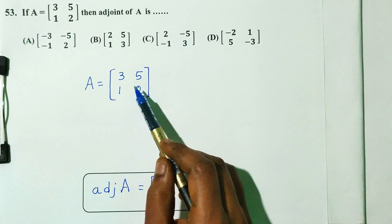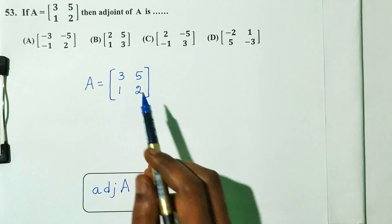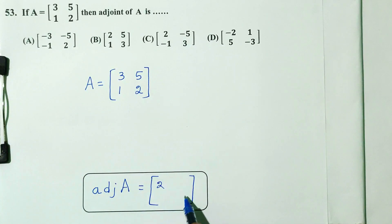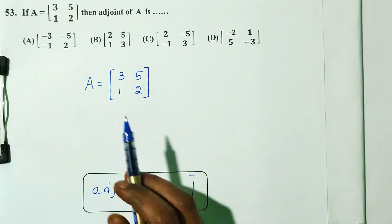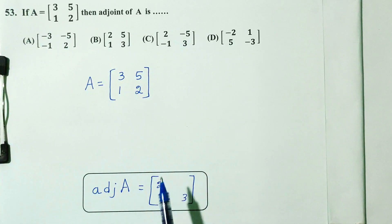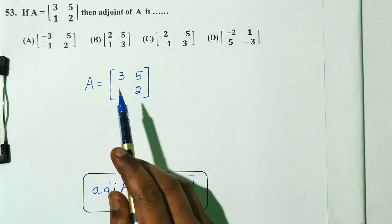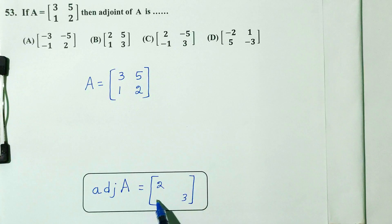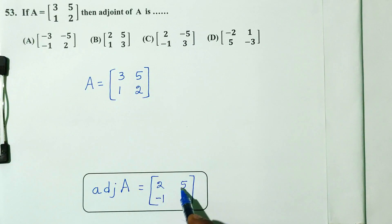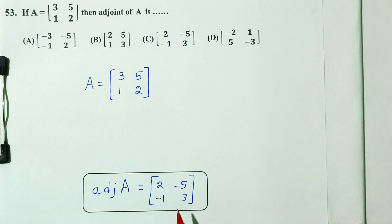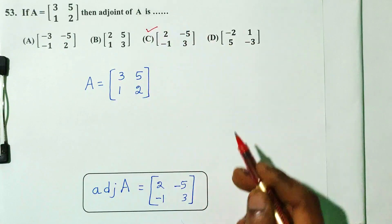To find the adjoint of A: first step — interchange the principal diagonal elements, so 3 and 2 swap. Second step — change the signs of the remaining elements: 1 becomes minus 1 and 5 becomes minus 5. So the adjoint of A is: 2, minus 5, minus 1, 3. The correct answer is option C.